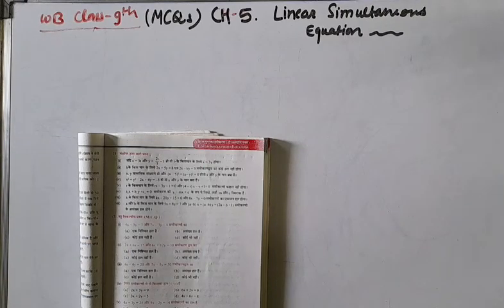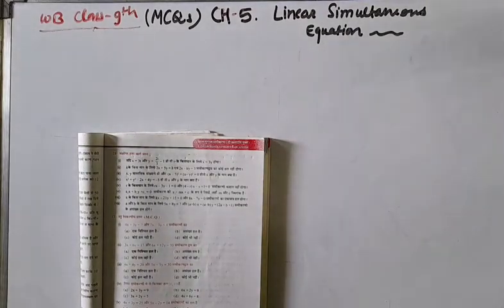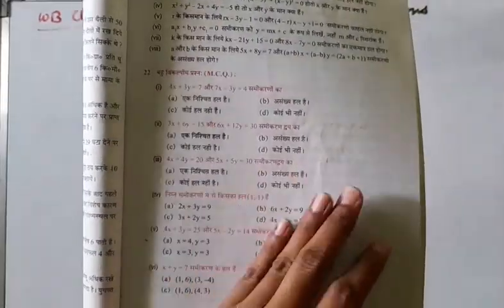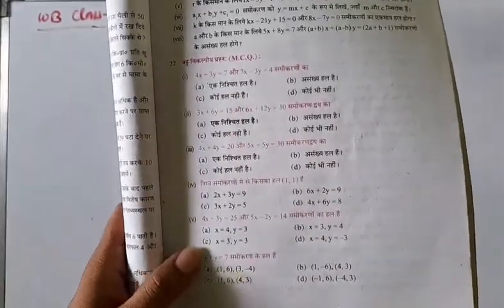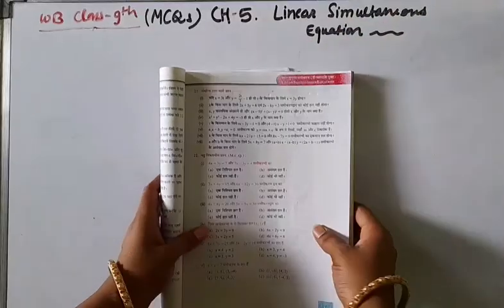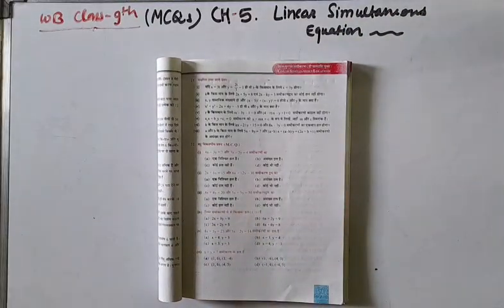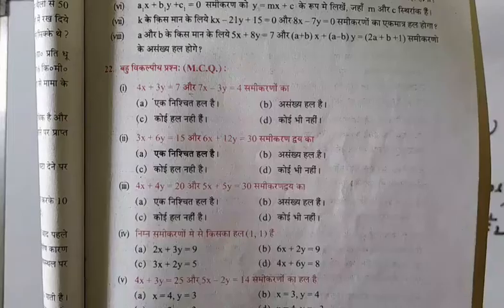Hello students, welcome to the channel Study with the Gay Sisters. Today we are going to do MCQs Chapter 5, that is Linear Simultaneous Equations. We will solve all the MCQs in linear simultaneous equations. We will provide both Hindi and English. Let's start Chapter 5 Linear Simultaneous Equations MCQs. You can see page number 71.